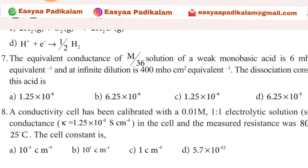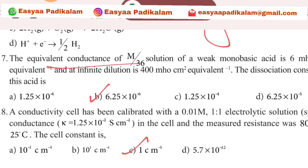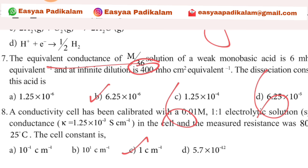Seventeenth question: equal conductance of 36. 36 is 36. We have 6. The answer is 6.25 into 10 power minus 6.